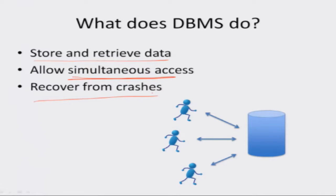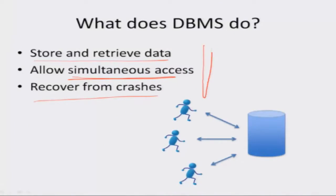The third function that a DBMS does is to recover from crashes. Computer systems fail — the hard disk crashes, power goes off, or software crashes. But if I have bought a train ticket, it should not happen that because the computer crashed my reservation is lost. Similarly, if I am transferring money from one account to another and the power fails in the middle, the money either should be fully transferred or not transferred at all. You cannot deduct money from my account and not add it to yours. Either you do not deduct at all, or if you deduct then you must add. The DBMS must ensure this even if there is a crash in between.